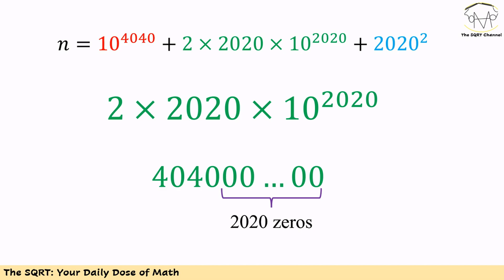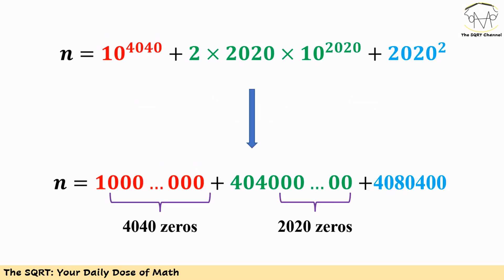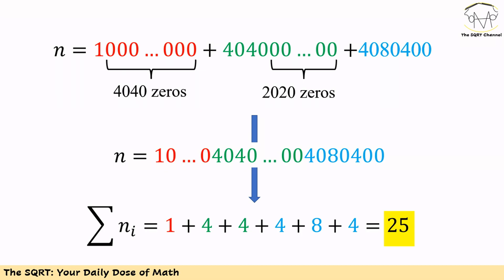For the last term, we simplify it directly to get 4080400. Now we have three terms with their final values, and we want to add them together. Starting from the right, we place the numbers accordingly, with appropriate zeros in between, to find the sum of digits in n.